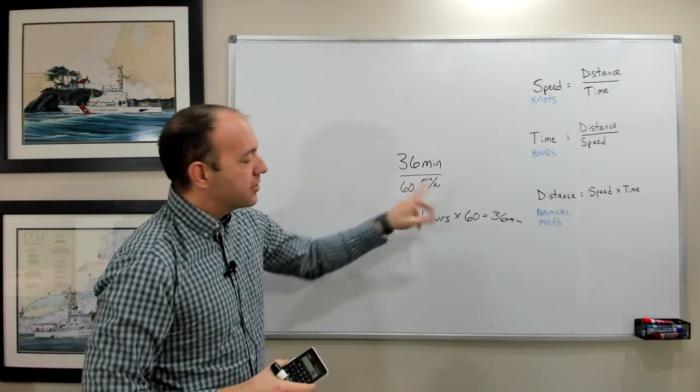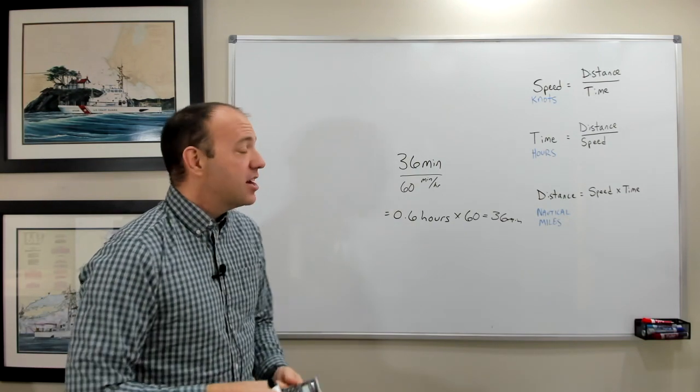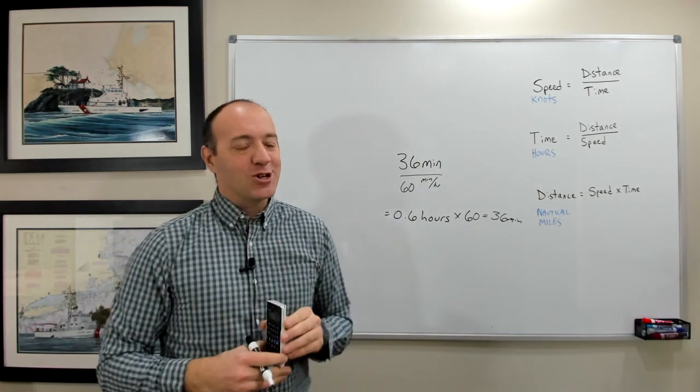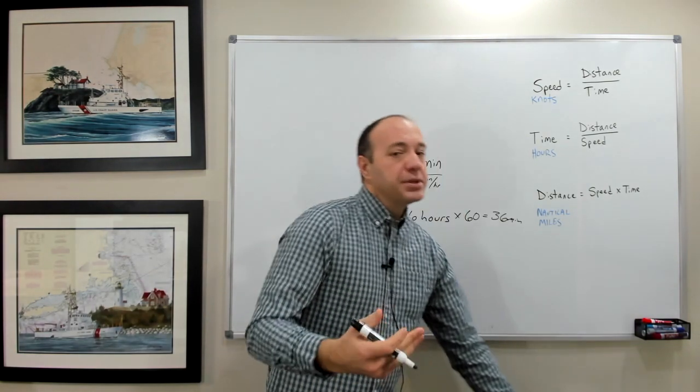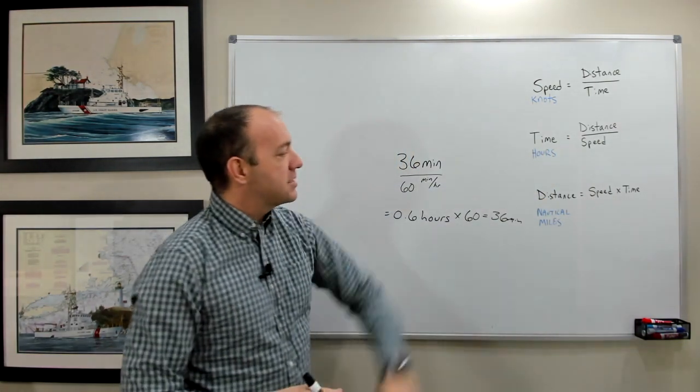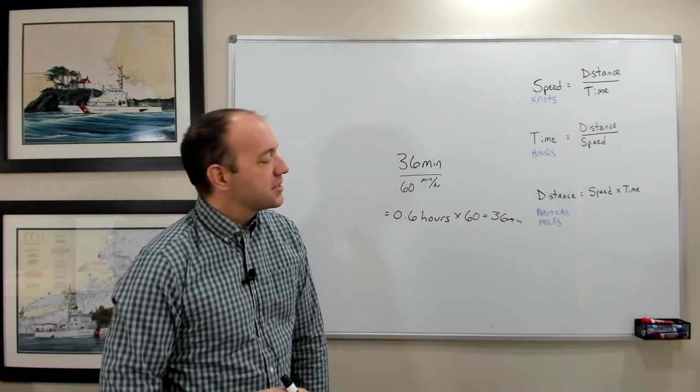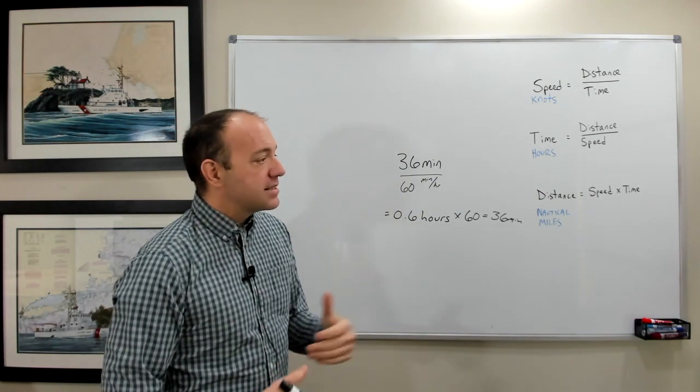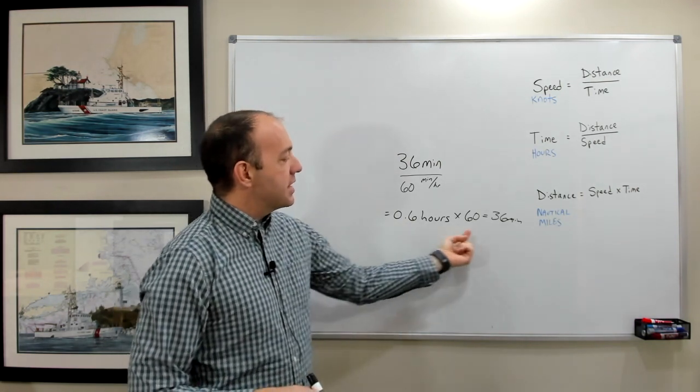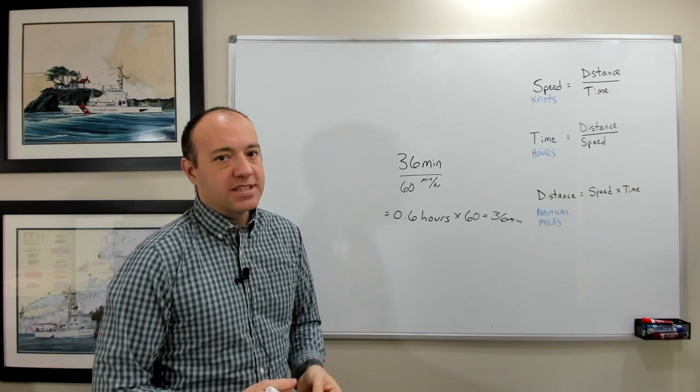So it's either multiplying or dividing by 60. The good news is pretty much every case, if you do the wrong thing, it's going to look like nonsense on your calculator. So just a couple of key points for speed, distance, time: speed is in knots, time is in hours, distance is in nautical miles. And then to convert from minutes to hours, divide by 60. And to convert from hours to minutes, multiply by 60 to get there.